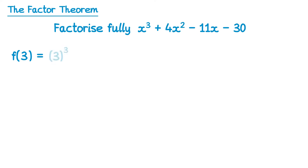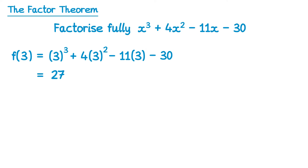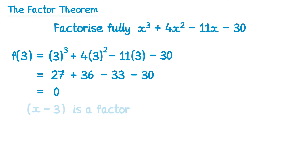f of 3 is 3 cubed plus 4 lots of 3 squared take 11 lots of 3 take 30. 3 cubed is 27, 3 squared is 9 and times 4 is 36, negative 11 times 3 is negative 33, then take 30. This does give you 0. So we've substituted in positive 3, meaning x take 3 is a factor.